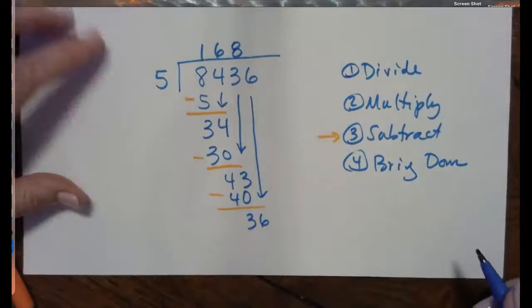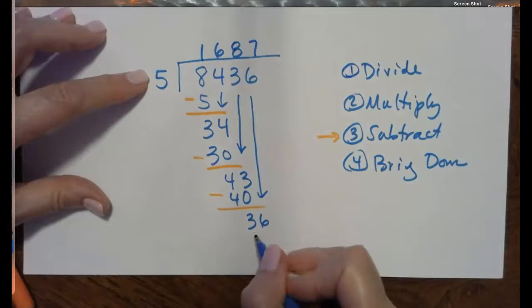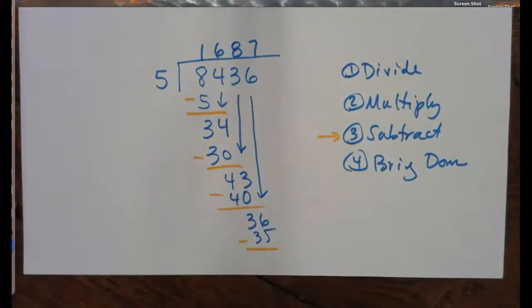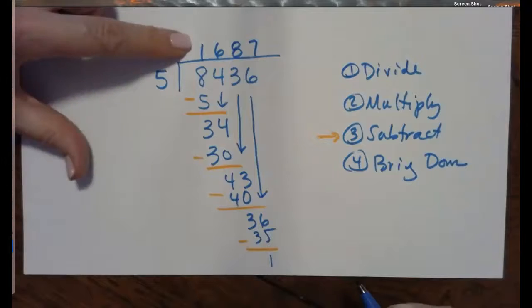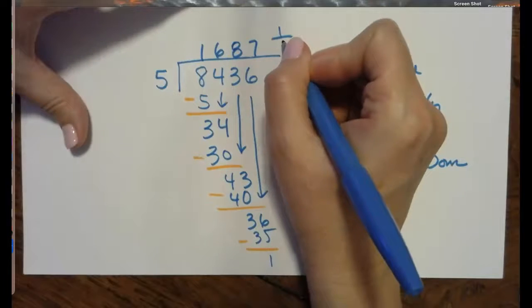And finally bring down the 6. 5 goes into 36, 7 times, 7 times 5 is 35, we will subtract, draw the line, change the sign, remainder 1. 1,687 and 1 fifth.